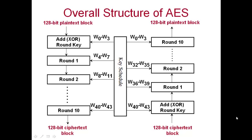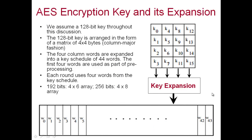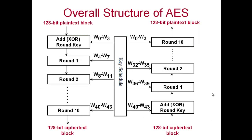This is the overall view of AES. We have the input which is a 128-bit plain text block. It goes through a sequence of rounds. Before encryption begins, you do an XOR with the round key and then go through the 10 rounds, assuming the key size is 128 bits. The key is expanded into a 44-word sequence, and the first four words are used for the initial XOR operation with the plain text block.